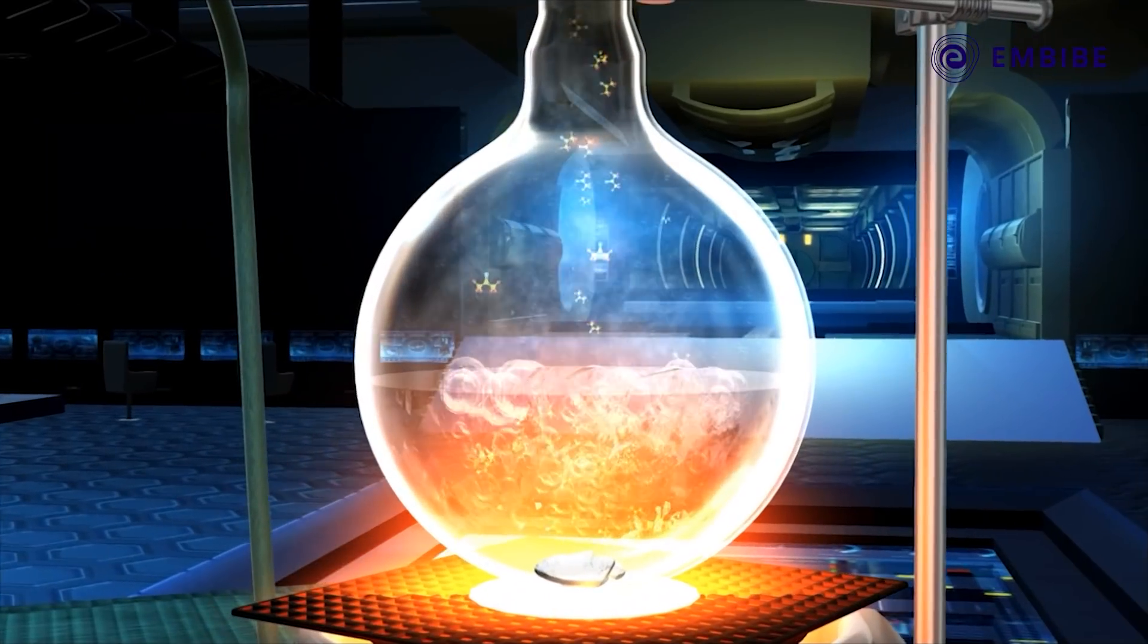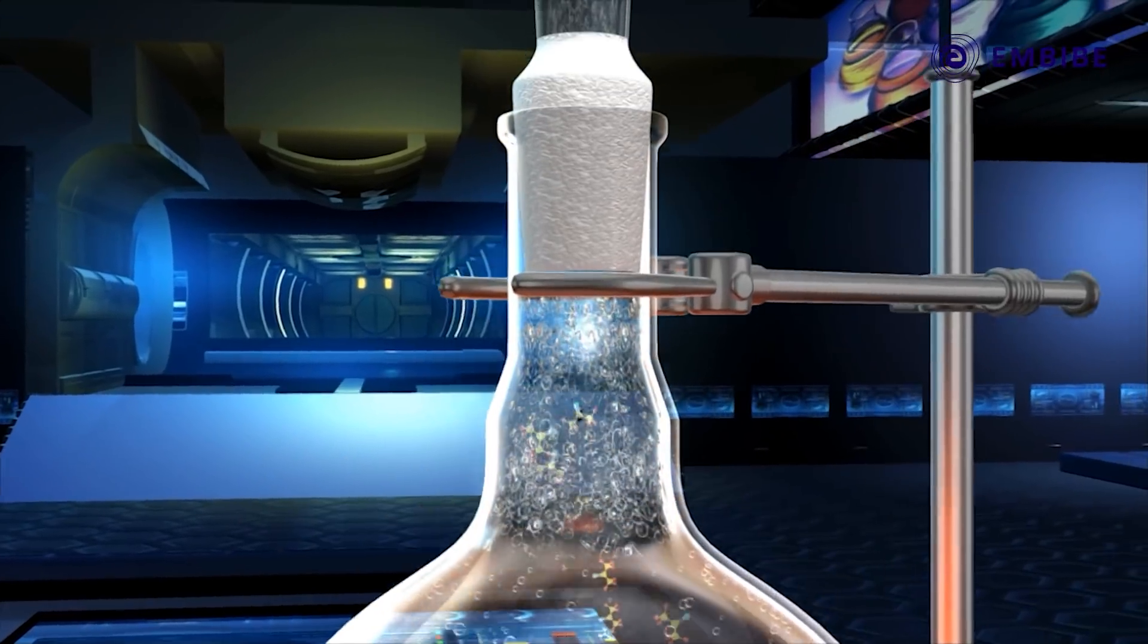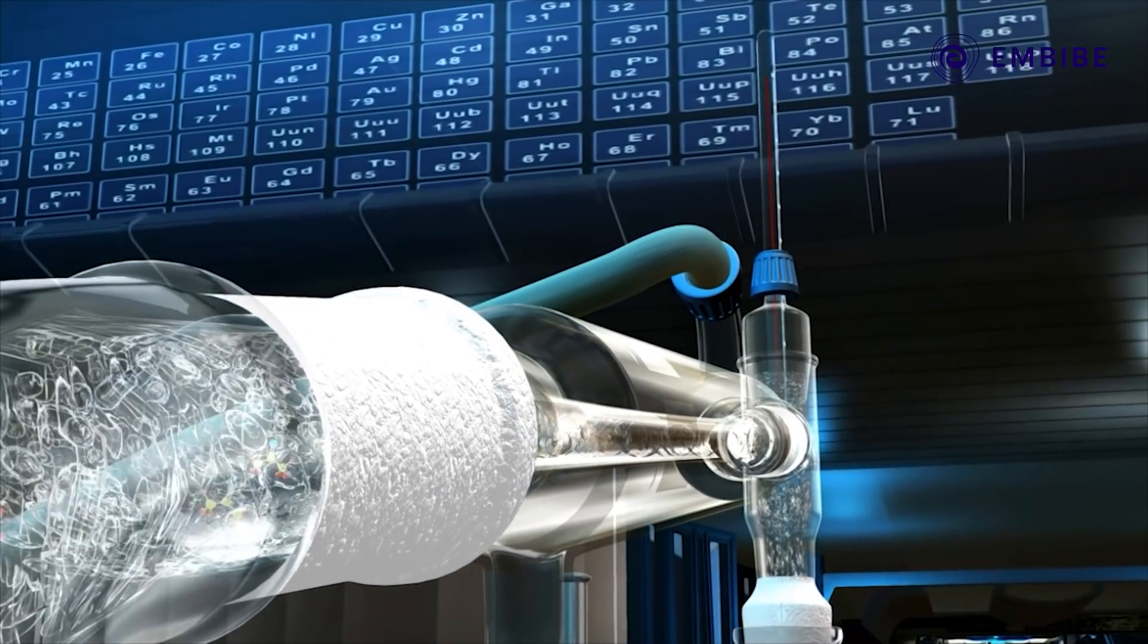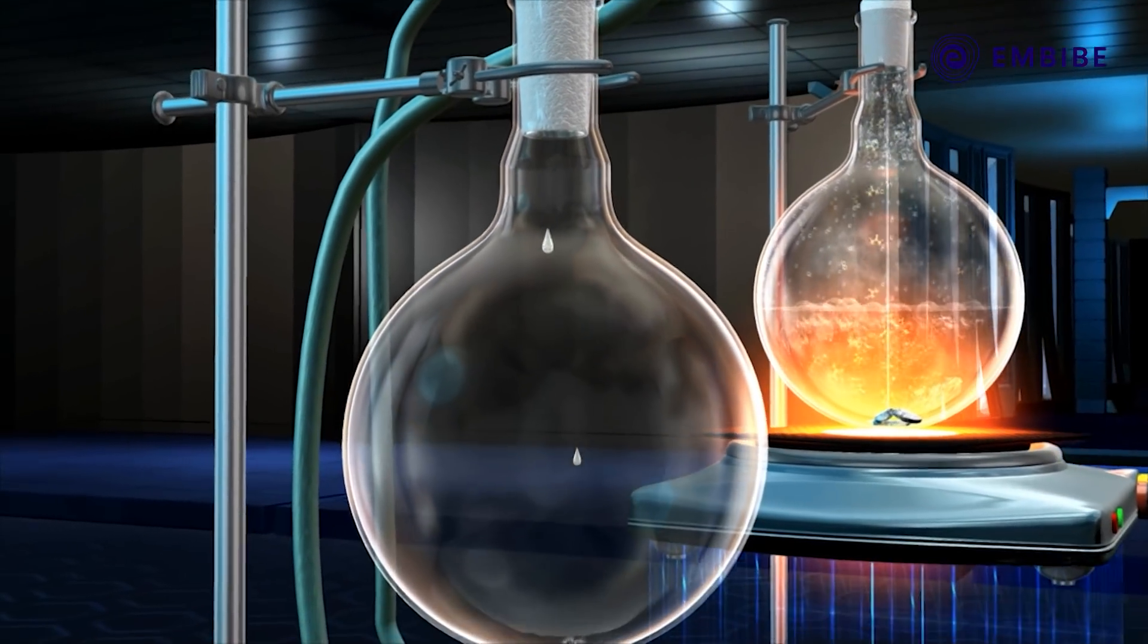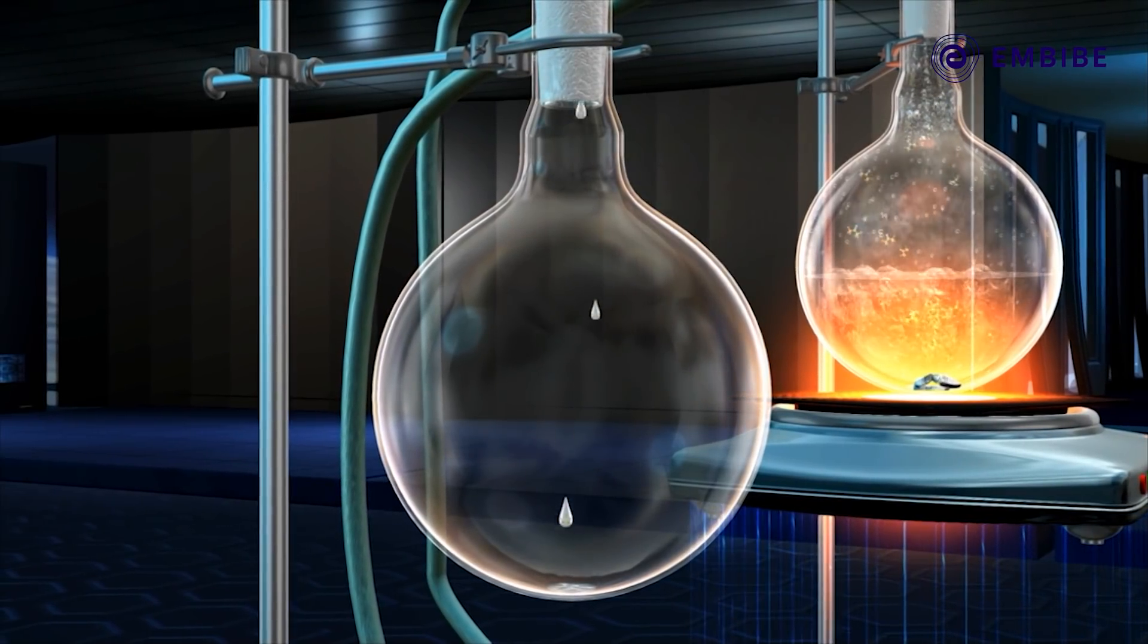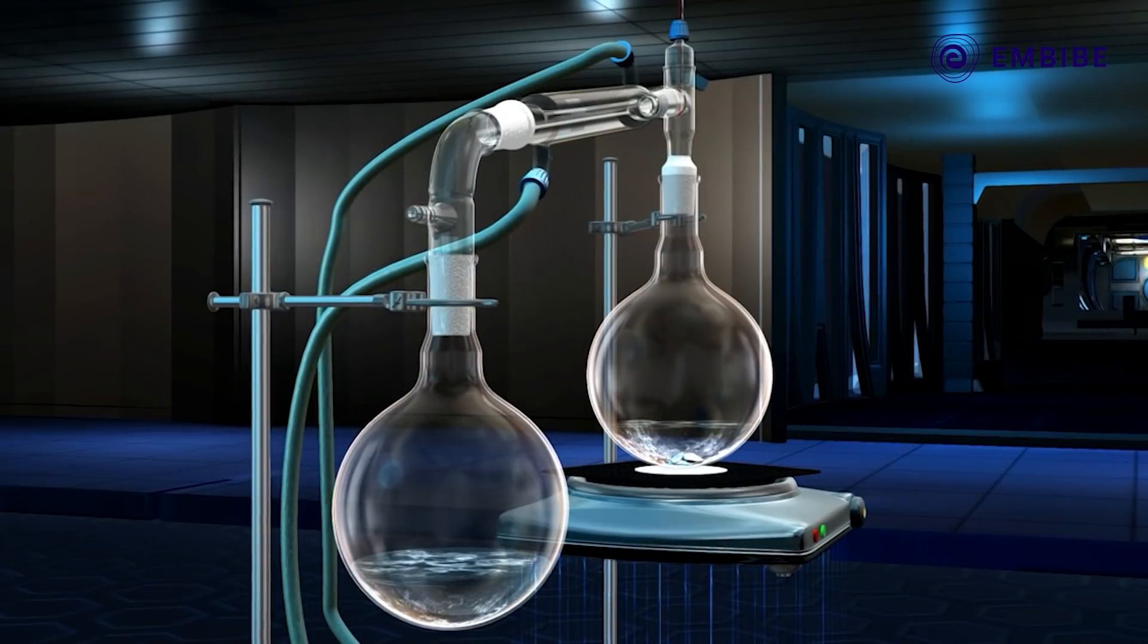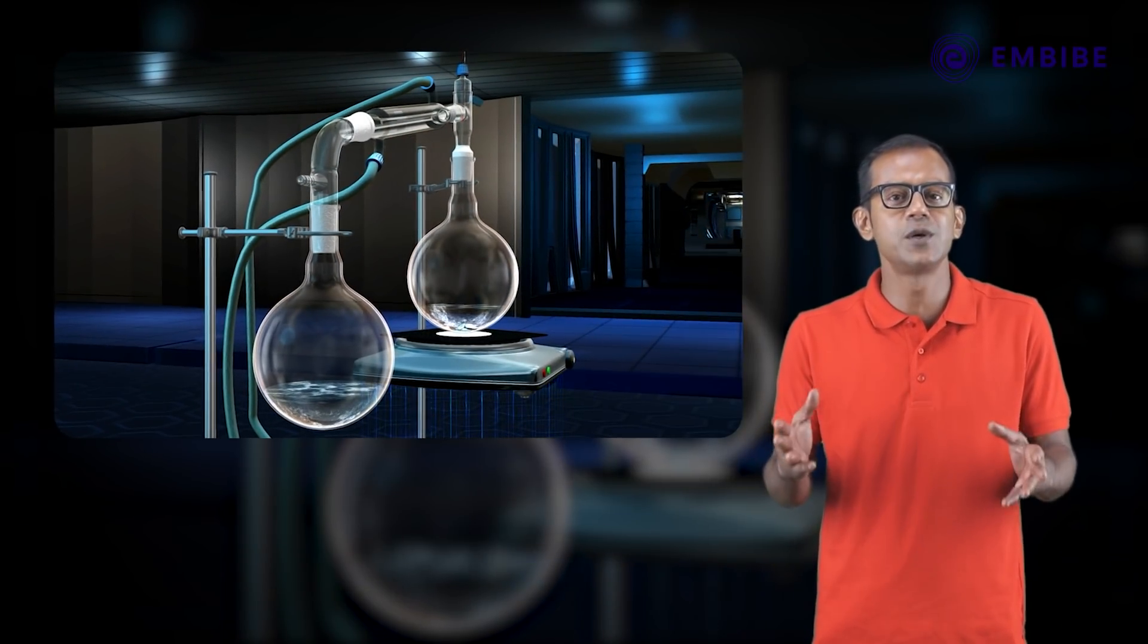Till all the acetone vaporizes, the temperature remains constant at 56 degrees centigrade. The vapor of acetone enters the inner tube of the condenser where it slowly cools and condenses back into droplets of acetone. This acetone is then collected in the receiving flask.